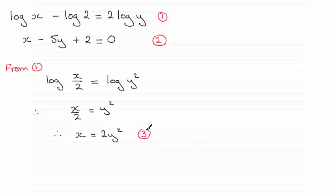And now I'm going to substitute x equals two y squared into equation two. So just put a note here that I'm going to do that. Sub three into equation two. And doing that, I end up with two y squared here for x, two y squared, then minus five y plus two equals zero.